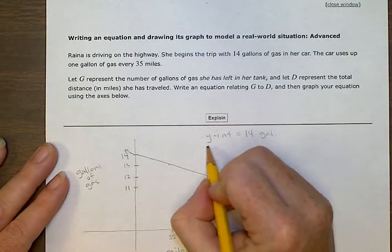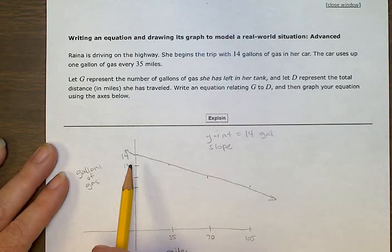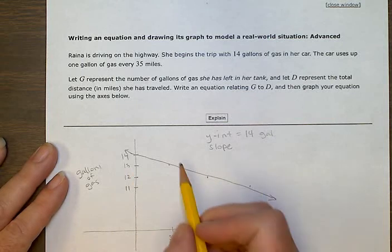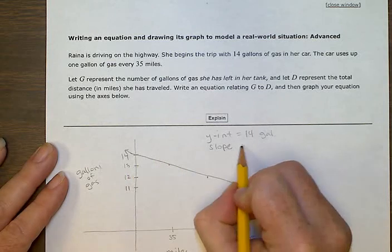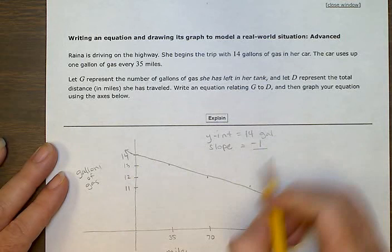And the slope, the slope is going down, right? It's negative. She's using up the gas. So she went down one gallon of gas every time she drove 35 miles.